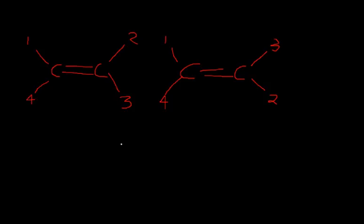With alkynes, however, there's a triple bond, which means the carbons can only bond to one other thing. There's basically only one way it can do that — not two like alkenes. So you don't need a cis and you never need a trans. It's just a number and then -yne.